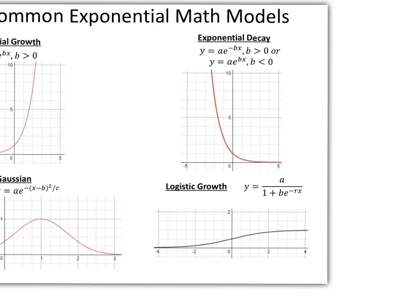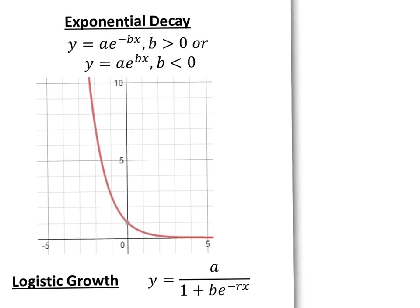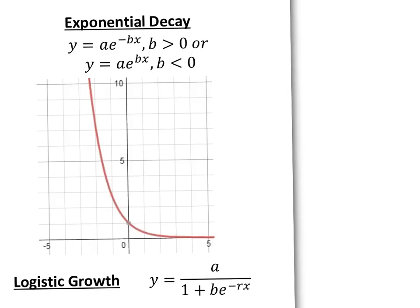Then we have exponential decay. This can be contrasted with exponential growth, because either we show it with a negative bx and b is greater than 0, or a positive bx and b is less than 0. Either way, we see that the impact is that instead of going up, our function goes down exponentially.